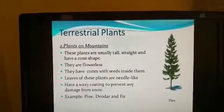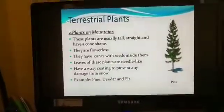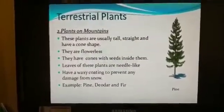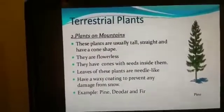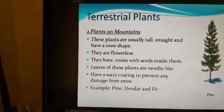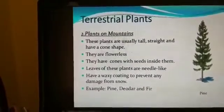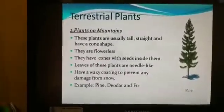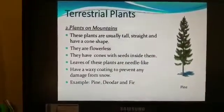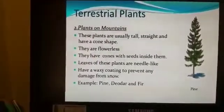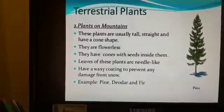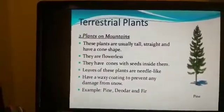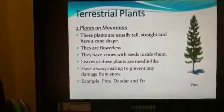The next type is the plants which grow on mountains. Their adaptive features are listed below. These plants are usually tall, straight and have a cone shape — so that water and snow can easily slide down the leaves and do not settle on them. They are flowerless and have cones with seeds inside them. They have needle-like leaves which are very stout so that the trees are not damaged by extreme cold. They are coated with wax to prevent any damage from snow. Examples: pine, deodar, and fir.